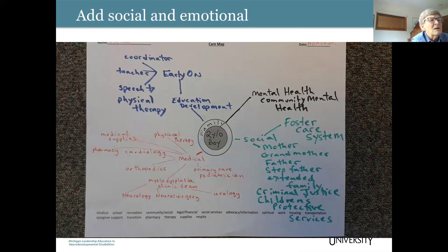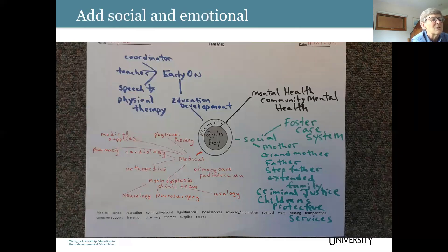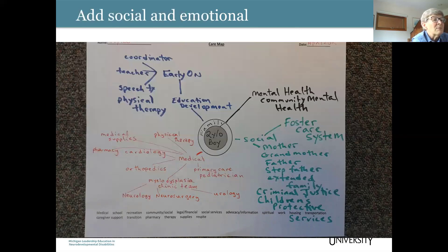In the southeast corner, there are many social factors. Miles has been involved in the foster care system. Children's Protective Services has been involved — he was removed from the home for a while because of concern about substance abuse and domestic violence. The criminal justice system is involved indirectly with his father being incarcerated. In the home there's the mother, the grandmother who is in and out, a stepfather, and extended family.